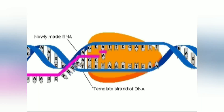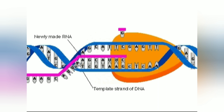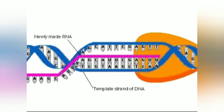If the parental strand base is adenine, then during transcription uracil will be added. The elongation of mRNA proceeds from five prime to three prime, and the region that has already been transcribed reforms into a double helix structure.